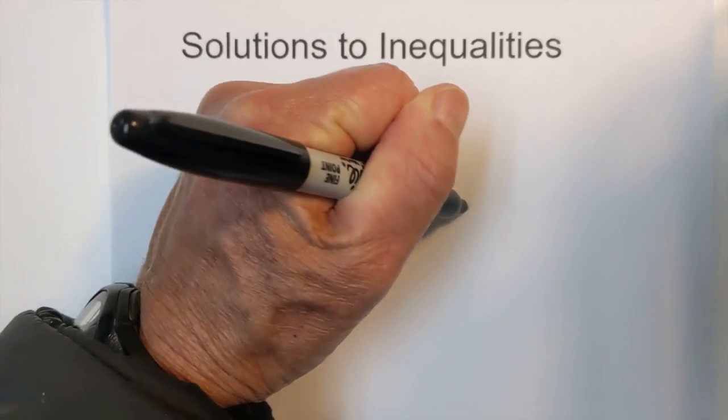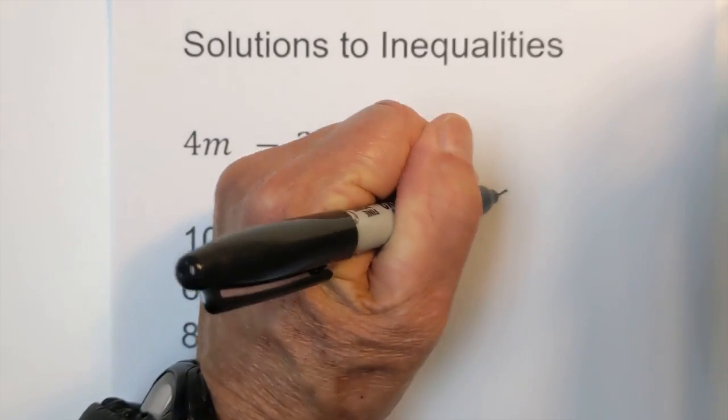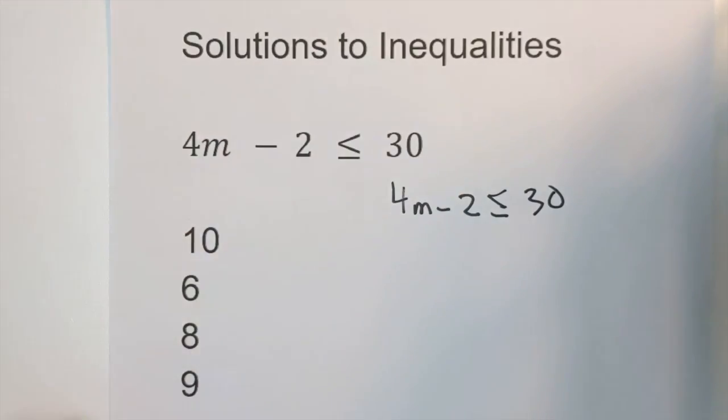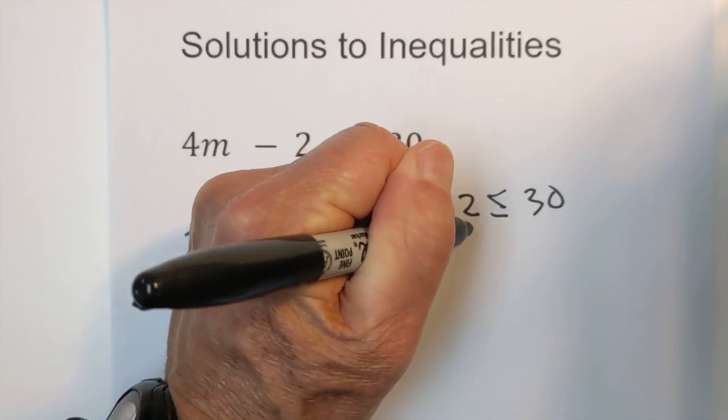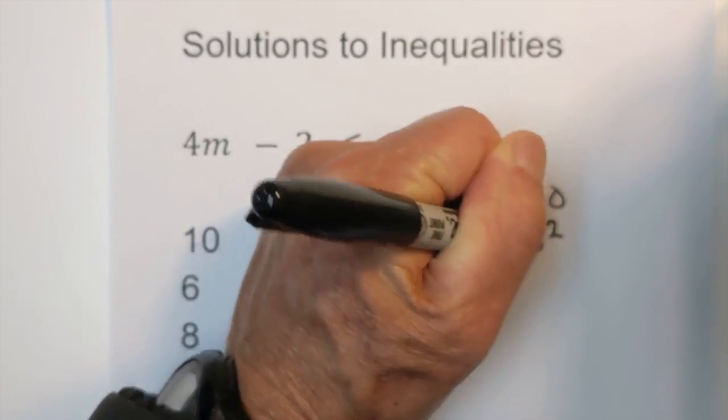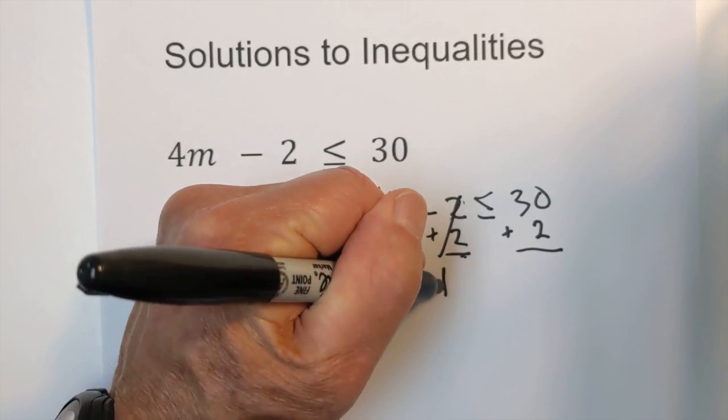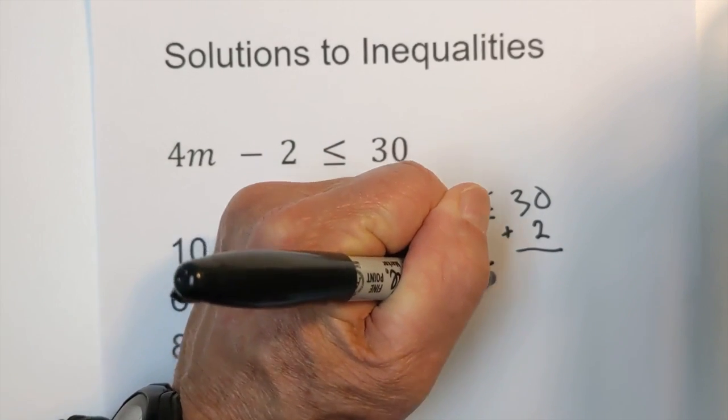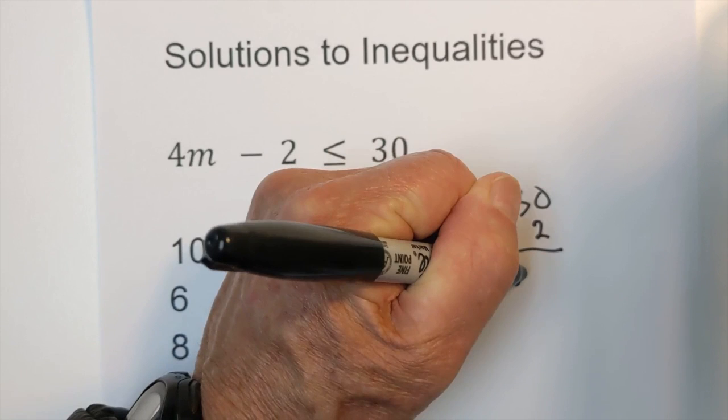So I'm going to go 4m minus 2 is less than or equal to 30. I'll add 2 to both sides. These cancel. I'll bring down the 4m less than or equal to 32.